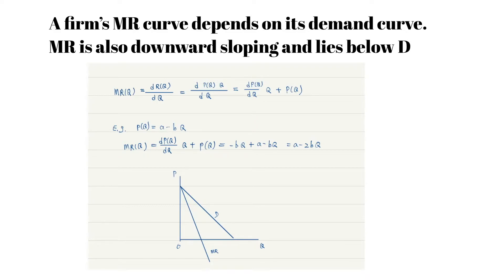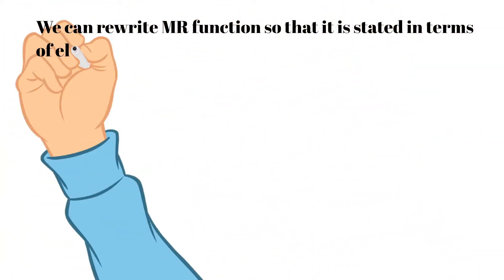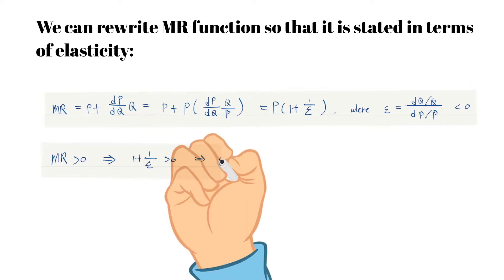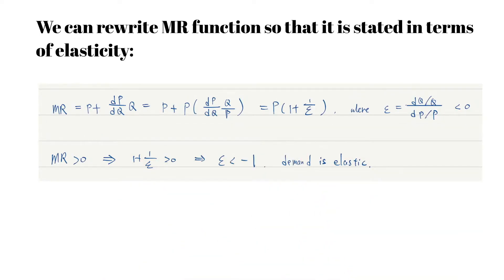An example is the linear inverse demand curve. We can rewrite the marginal revenue function in terms of elasticity. The marginal revenue should be positive, which implies that the elasticity is less than minus one, meaning a monopoly operates in the elastic portion of the demand curve. It never operates in the inelastic portion of its demand curve.